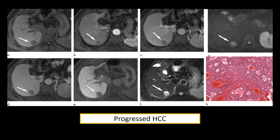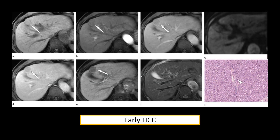In a case of progressed HCC, the nodule is T1 hypointense with no significant arterial hyperenhancement, but shows portal and delayed phase washout and hypointensity on HBP. It is T2 hyperintense with diffusion restriction. By contrast, in early HCC, there is no T2 hyperintensity, no arterial hyperenhancement, only subtle washout in portal and delayed phase, and well-defined hepatobiliary phase hypointensity — with no diffusion restriction.